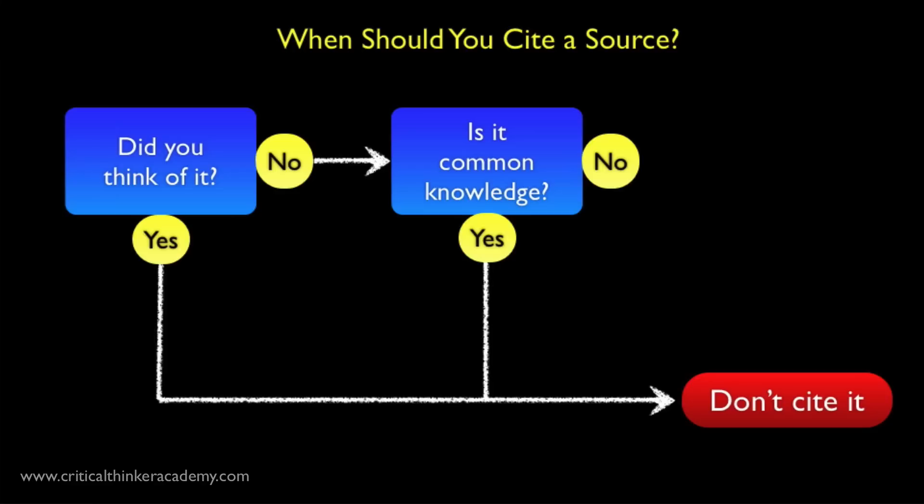This is the basic idea. If the claim you're making isn't your idea and it's not common knowledge, then it had to come from somewhere, and you need to cite the source or the claim. But if you thought of it, or if it's common knowledge, then you don't have to cite it.